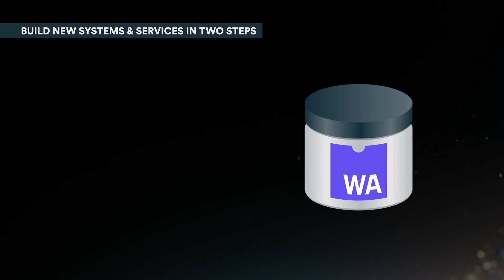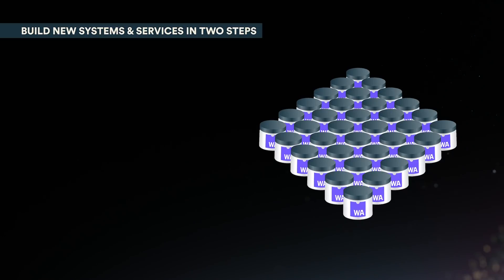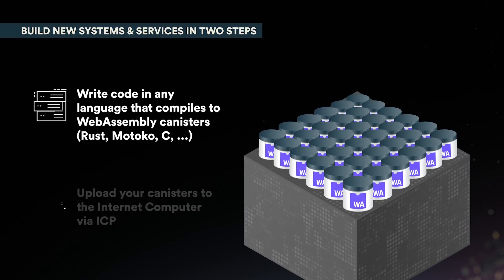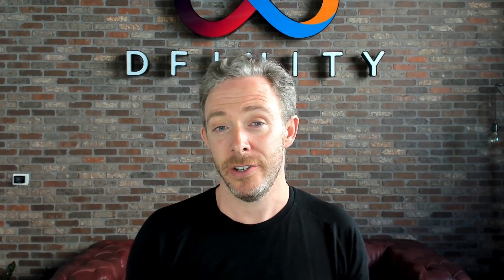You can create new systems and services on the internet computer in two simple steps. In the first step you write code in any programming language that compiles down to a WebAssembly canister, such as Rust or Motoko. In the second step you simply upload the canisters that you've created to the internet computer using its open protocols. That's it. The internet computer enables you to build directly on the internet itself — no big tech, no legacy building blocks, no cloud services.